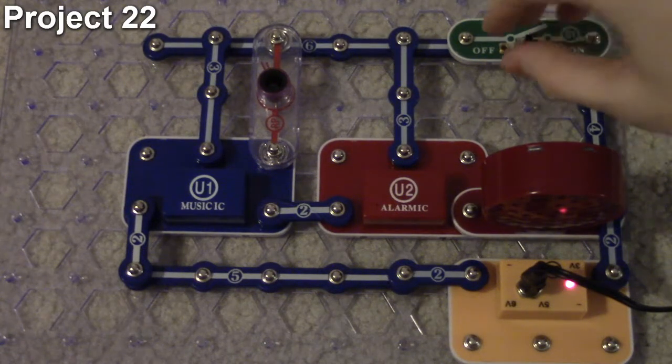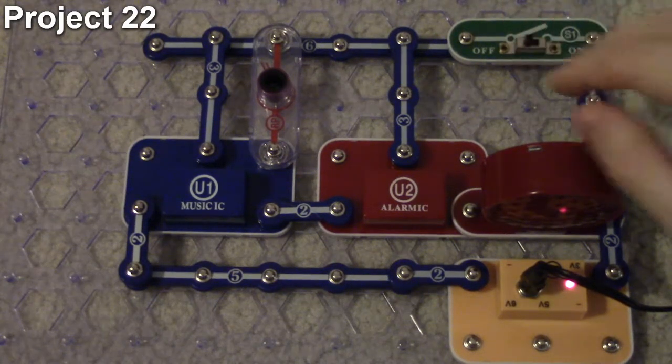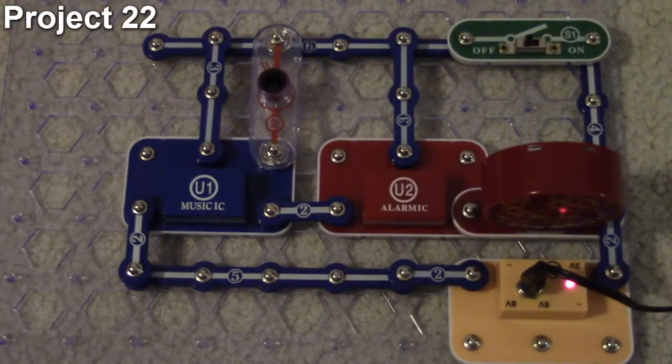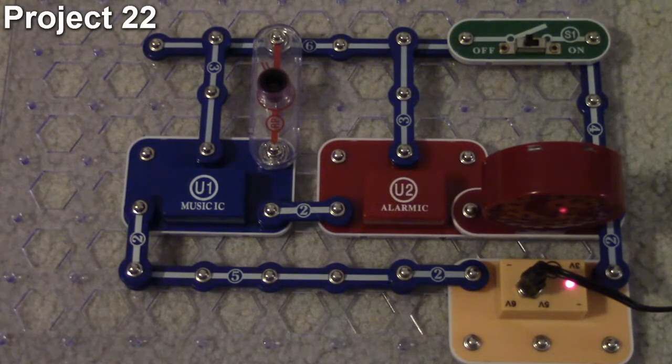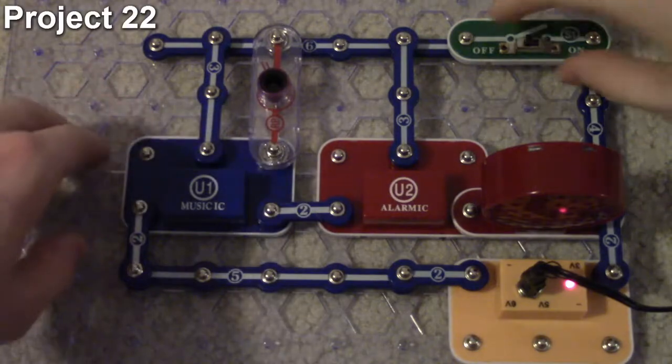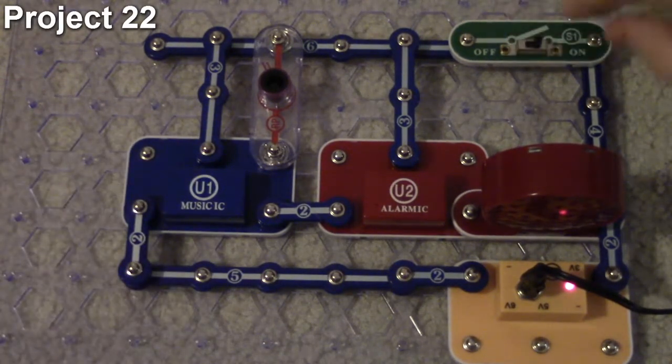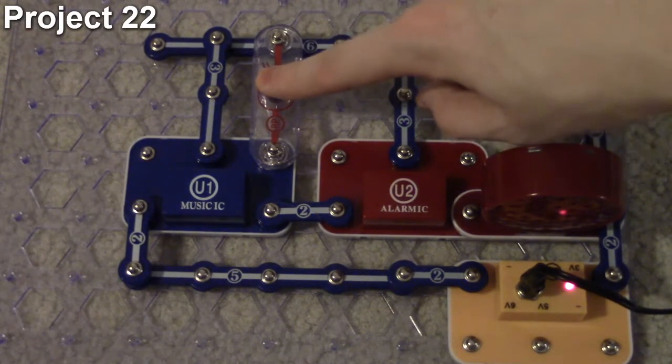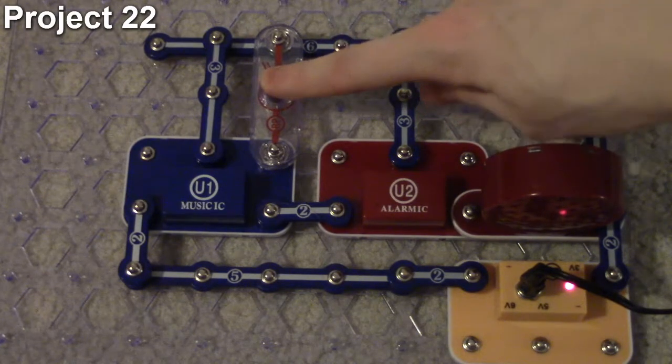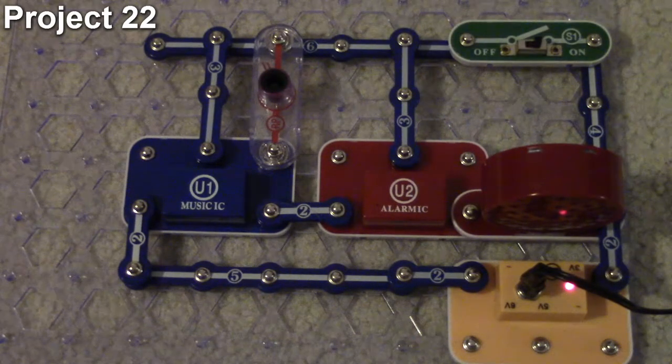The whole thing is turned on and off with our slide switch and then we can control the playback via our photoresistor. So I just turn it on. If I cover the photoresistor it stops, if I let my finger off it starts up and will continue looping as long as that thing is uncovered.